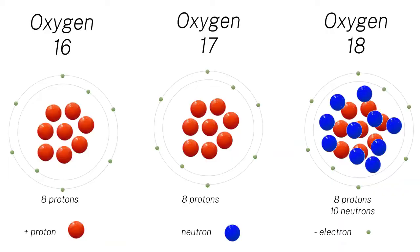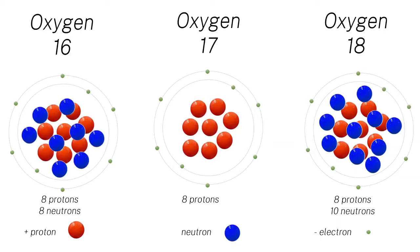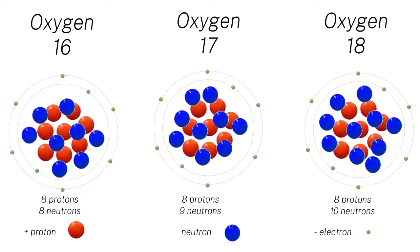Changing the number of neutrons in an atom does not change the element — it's still oxygen — but it does change the weight of the atom so that it behaves slightly differently.